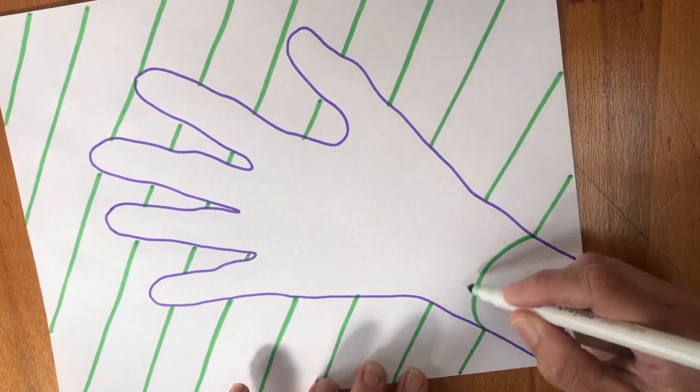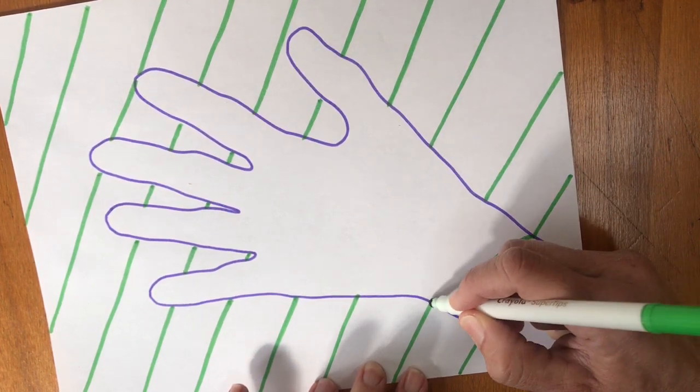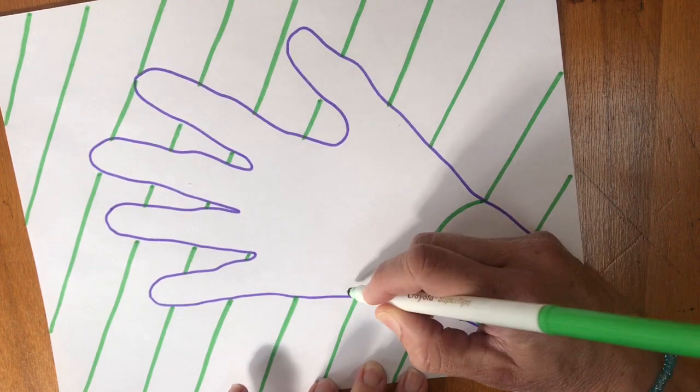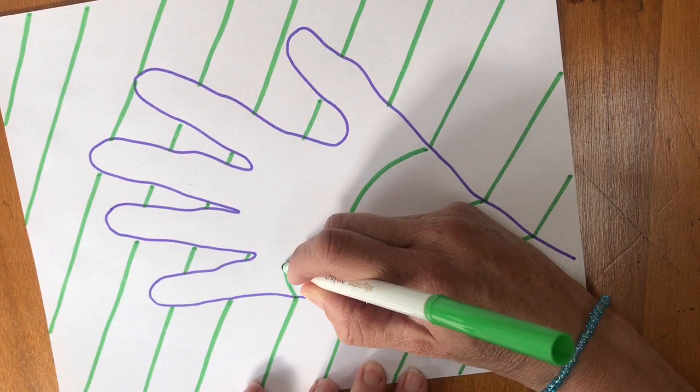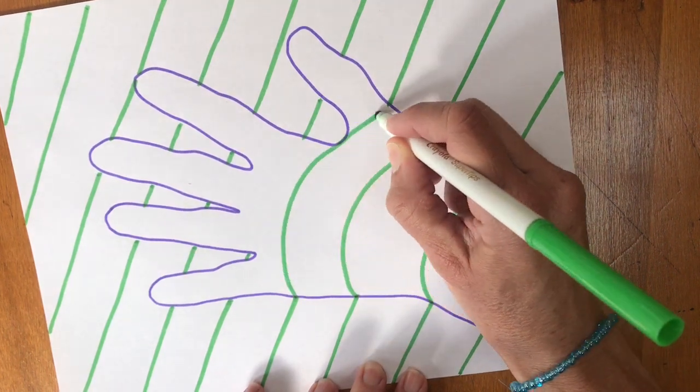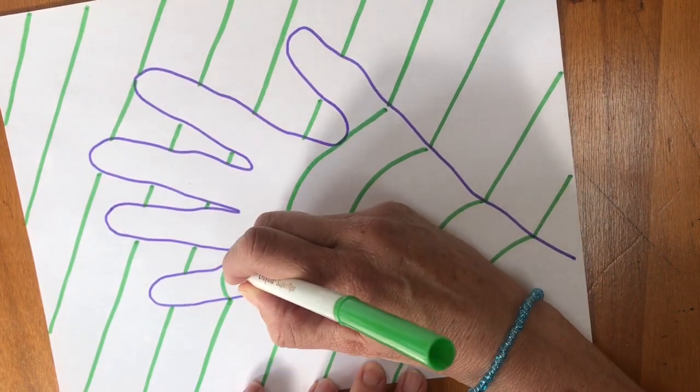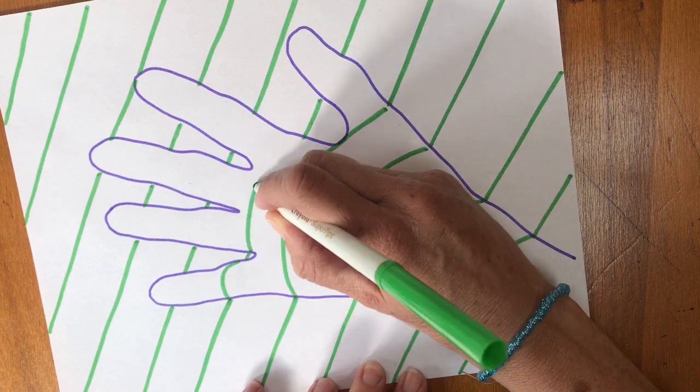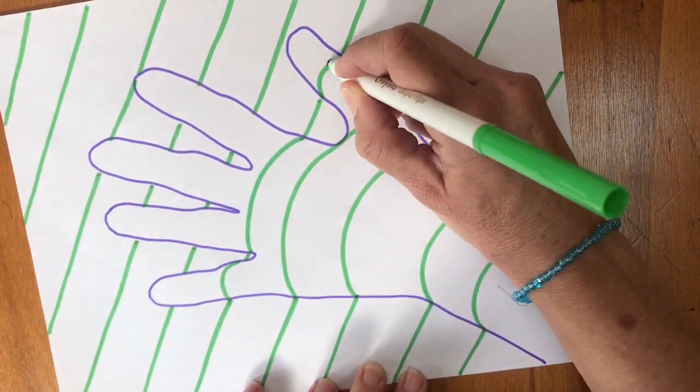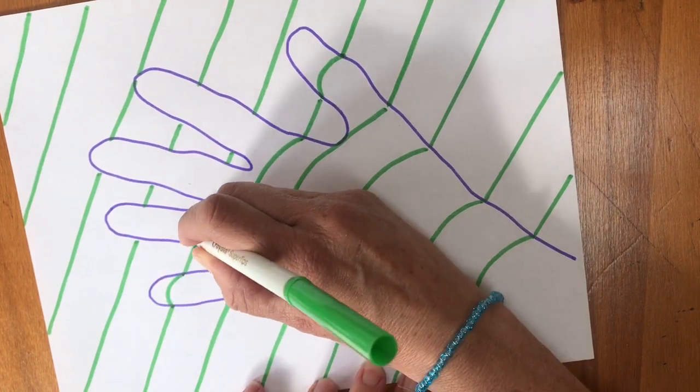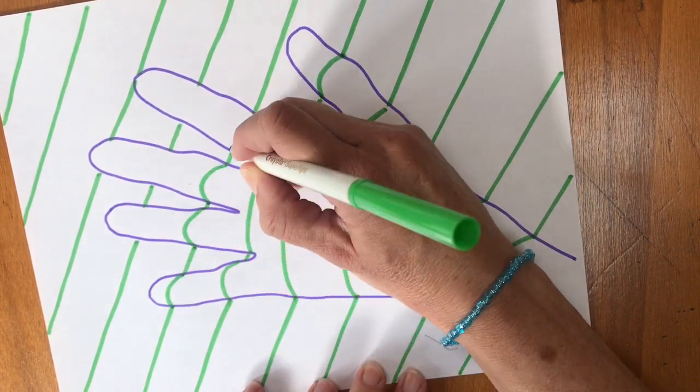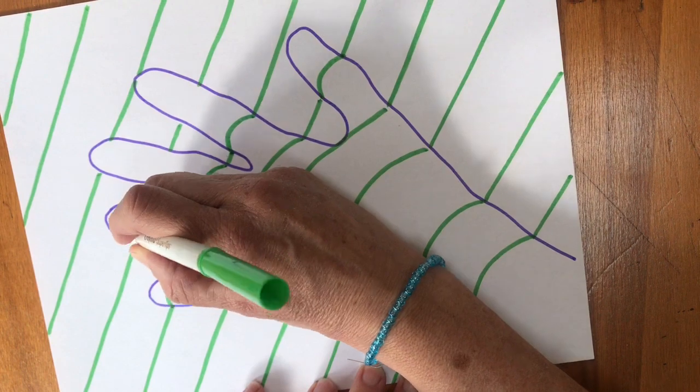So I'm going to go, see how that bumps out like a rainbow line, like a curve. Curve there, and I'm connecting one line to the other. When I have the fingers, I'm going to have multiple curves because I'm going to go from each point of my green and connect them.